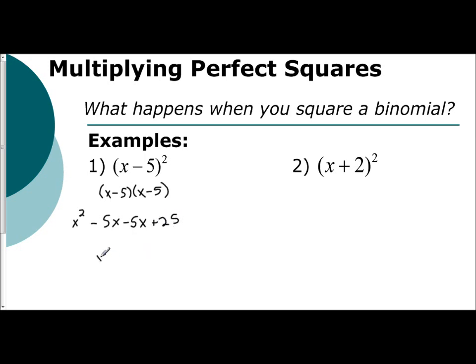You combine like terms, you get x squared minus 10x plus 25. So when we square x minus 5 squared, we get x squared minus 10x plus 25.